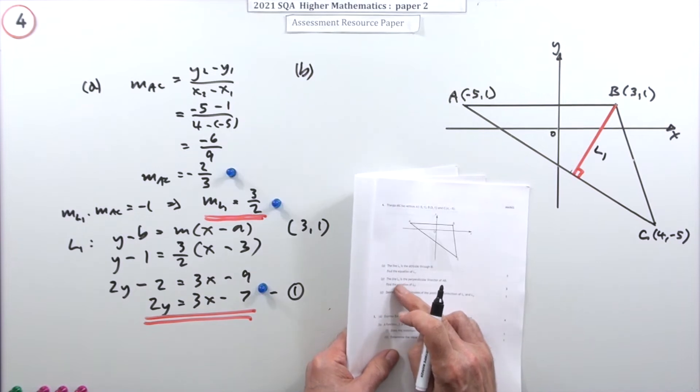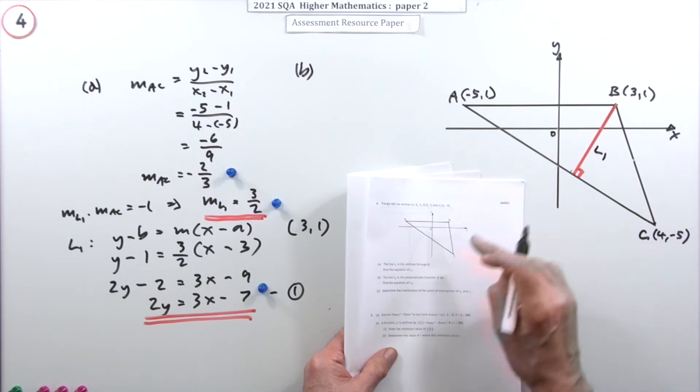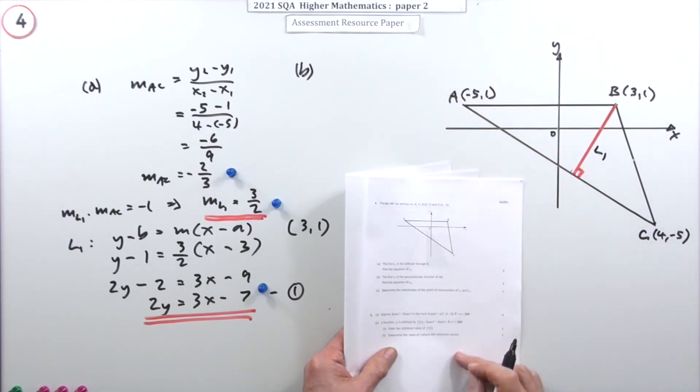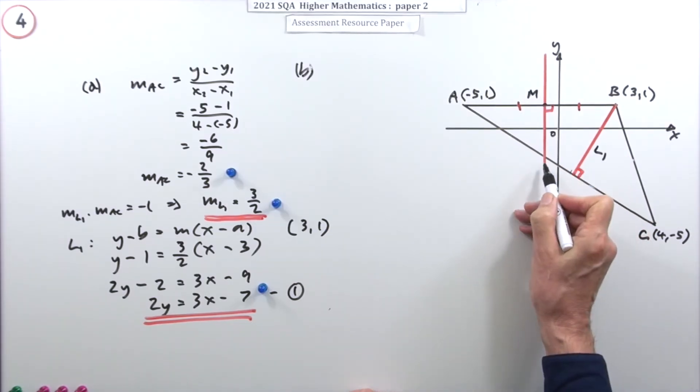Now part B: another line, line 2, is the perpendicular bisector of AB. Perpendicular so it goes through at right angles, bisector so it cuts it in the middle. What's the equation of this line?